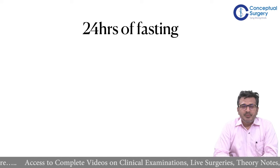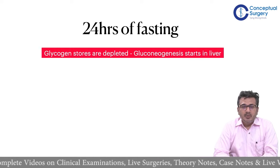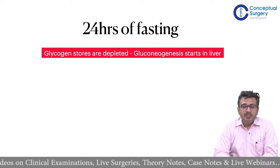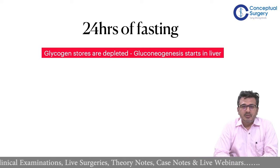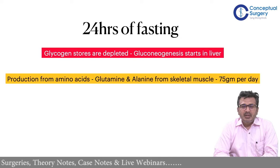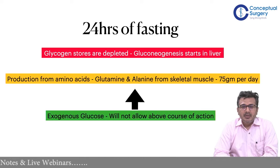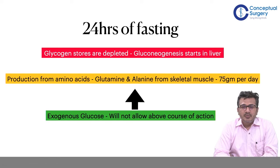What happens if I stop eating for 24 hours — a full fast? The glycogen stores from the liver get depleted and there will be gluconeogenesis in the liver. The next step is mobilization of amino acids from the muscles, which will start providing a source of glucose production of approximately 75 grams per day. However, exogenous glucose will prevent this course of action — this breakdown does not happen when you give exogenous glucose during 24 hours of fasting.